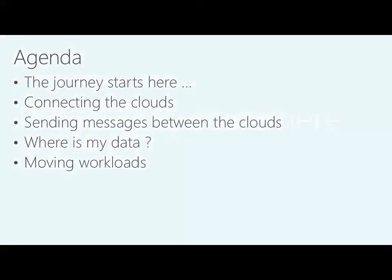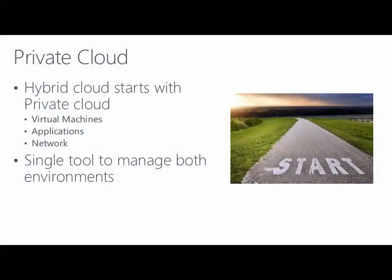So where do you start the journey? The journey starts with the private cloud. The private cloud brings some key components to understand what hybrid cloud means and how you can evolve from private to public. The key components are around virtual machines, applications, application architecture, and networking — network virtualization, or what we call software defined networking. It is critical to have a single tool to manage both environments through a single pane of glass, and this is where System Center App Controller comes in.